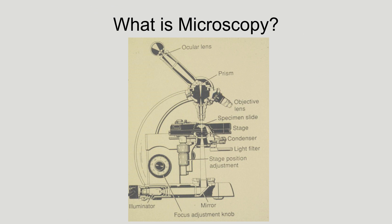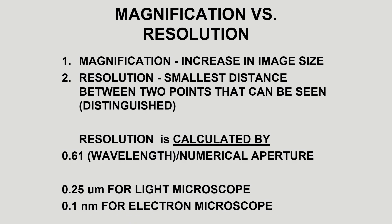The first thing we want to ask is: what is microscopy? Microscopy is really anything that uses a microscope — studying something with a microscope is microscopy. That is very important in histology because what we're going to be studying are specifically tissues and cells at the microscopic level.